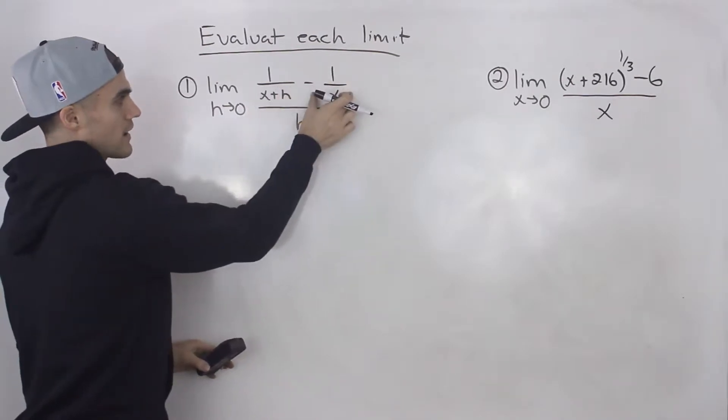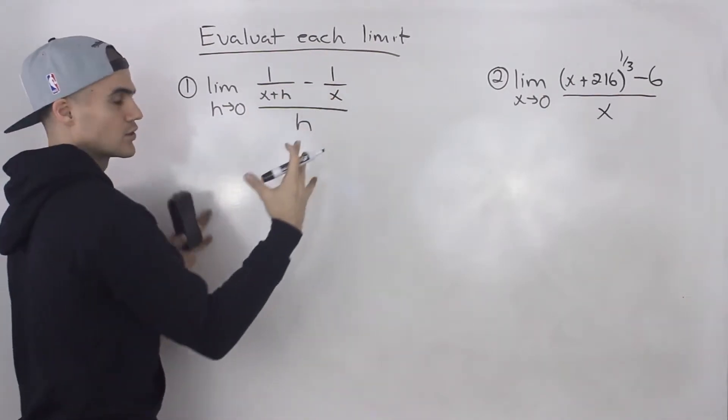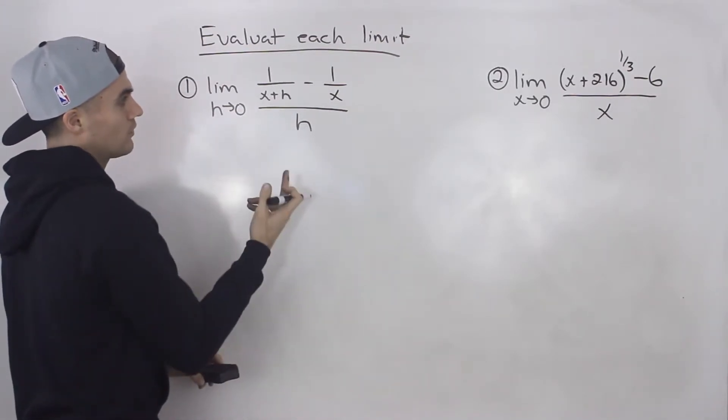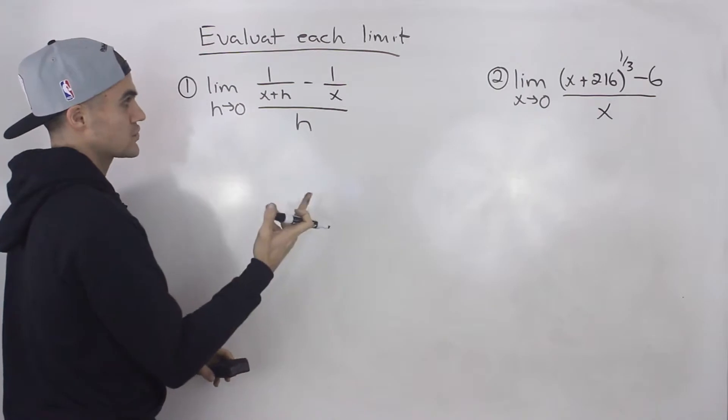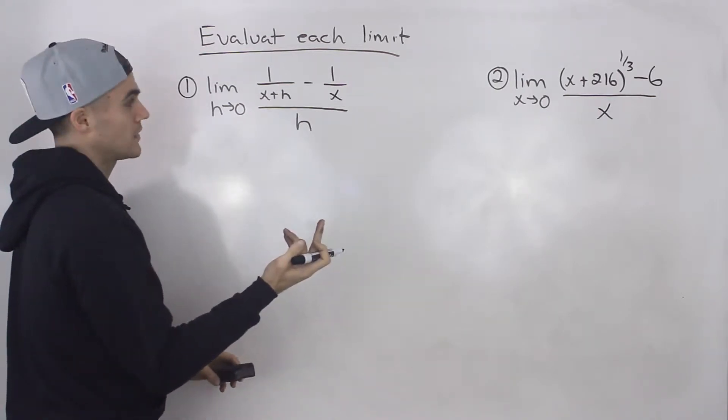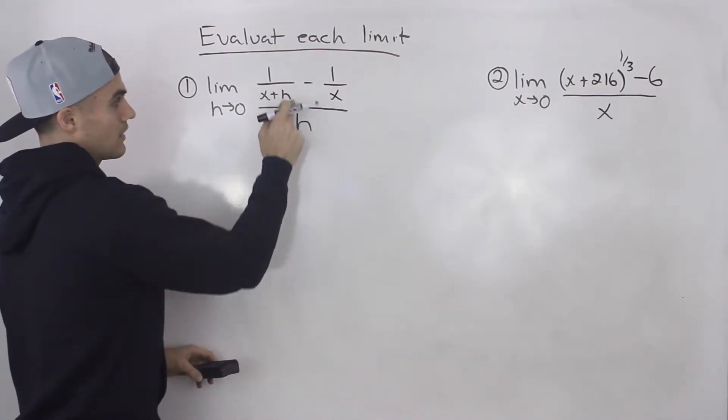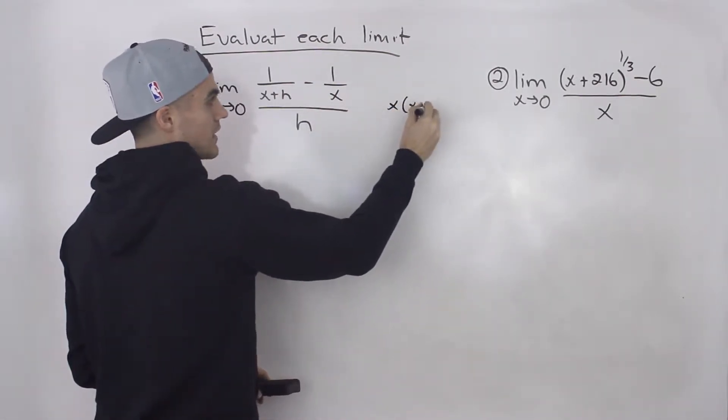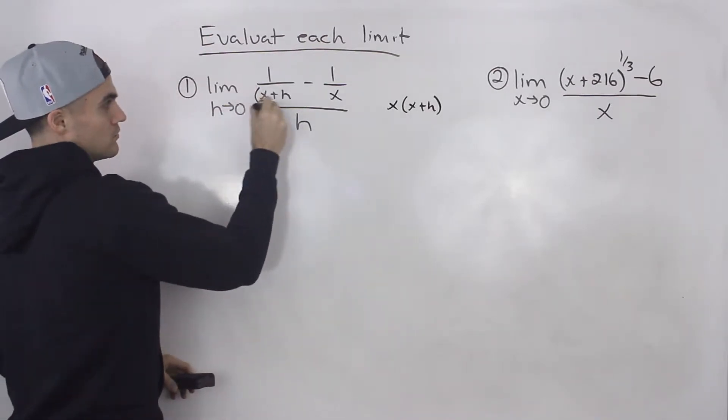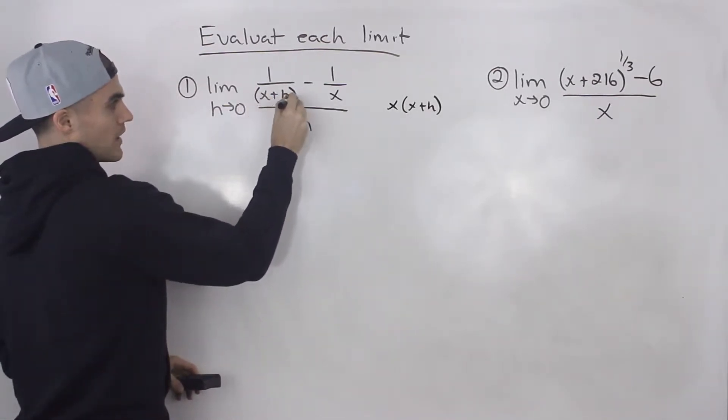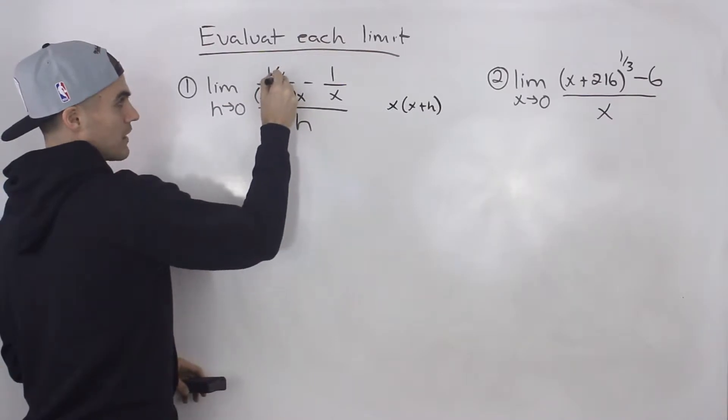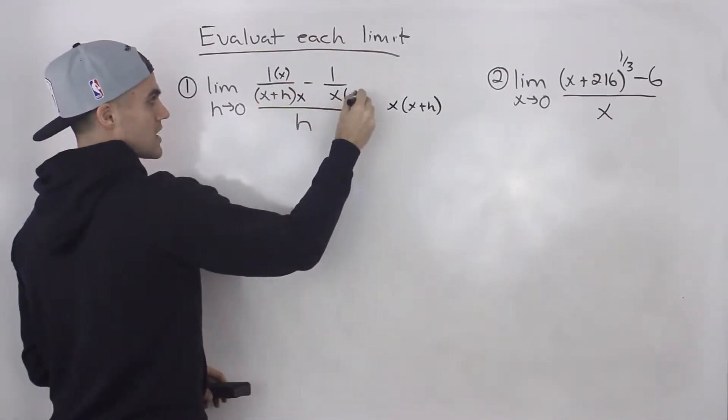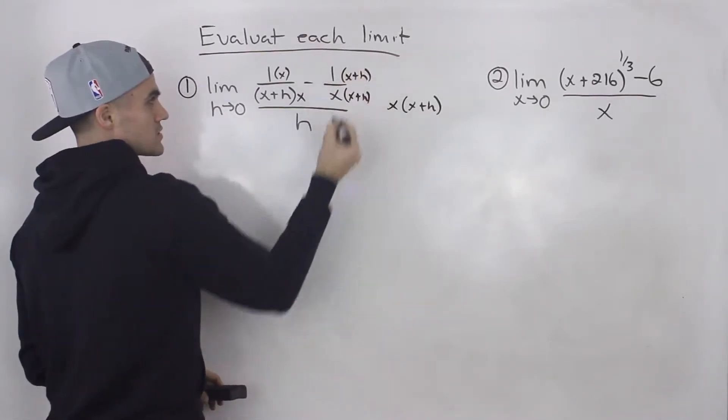So we've got to take these two fractions in the numerator, try to subtract them, make them into one fraction. And in order to subtract two fractions, they have to have what? A common denominator. And a common denominator between x and x plus h is just x times x plus h. So what do we have to multiply this one by? We have to multiply it by x, meaning that we have to multiply the top by x. And then this one here, we have to multiply by x plus h, meaning we have to multiply the top by x plus h as well.